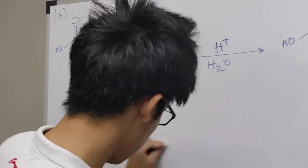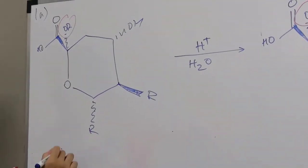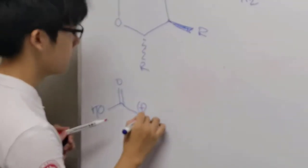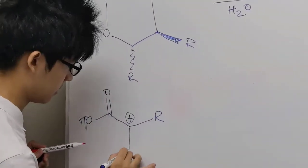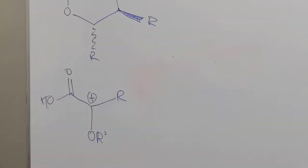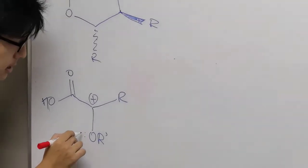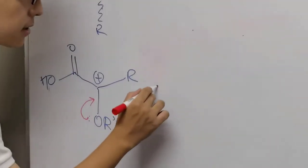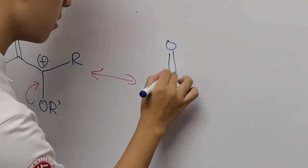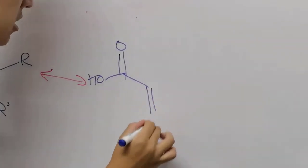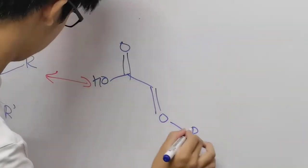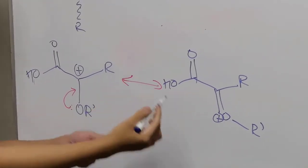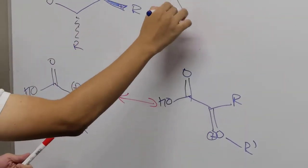Let me show you how this is resonance stabilized. Let me draw a simplified carbocation for this compound. This is the carbocation for this compound. What we notice is that the electrons on oxygen can actually delocalize into this carbocation to produce this resonance structure. As you can see, the carbocation is resonance stabilized. Therefore, this whole mechanism goes through an SN1 mechanism.